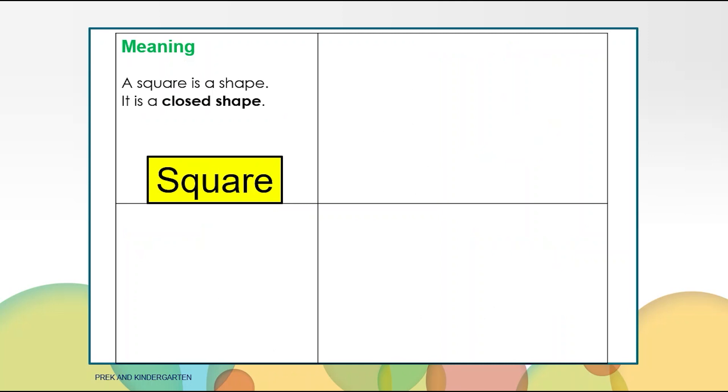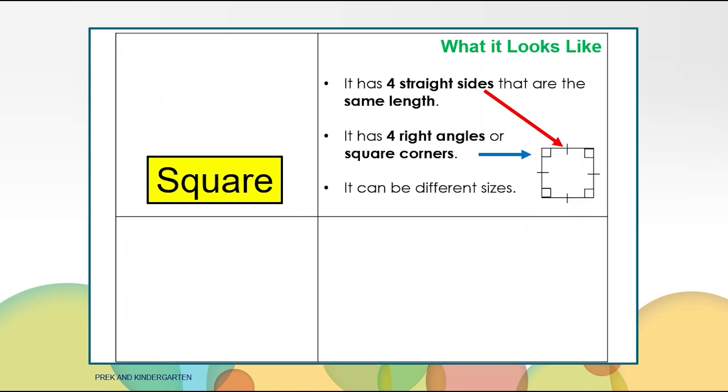Now let's look at a square. It is a closed shape. It has four straight sides that are all the same length. The red arrow is pointing to one of the sides. A square also has four right angles or square corners. The blue arrow is pointing to one of the corners.